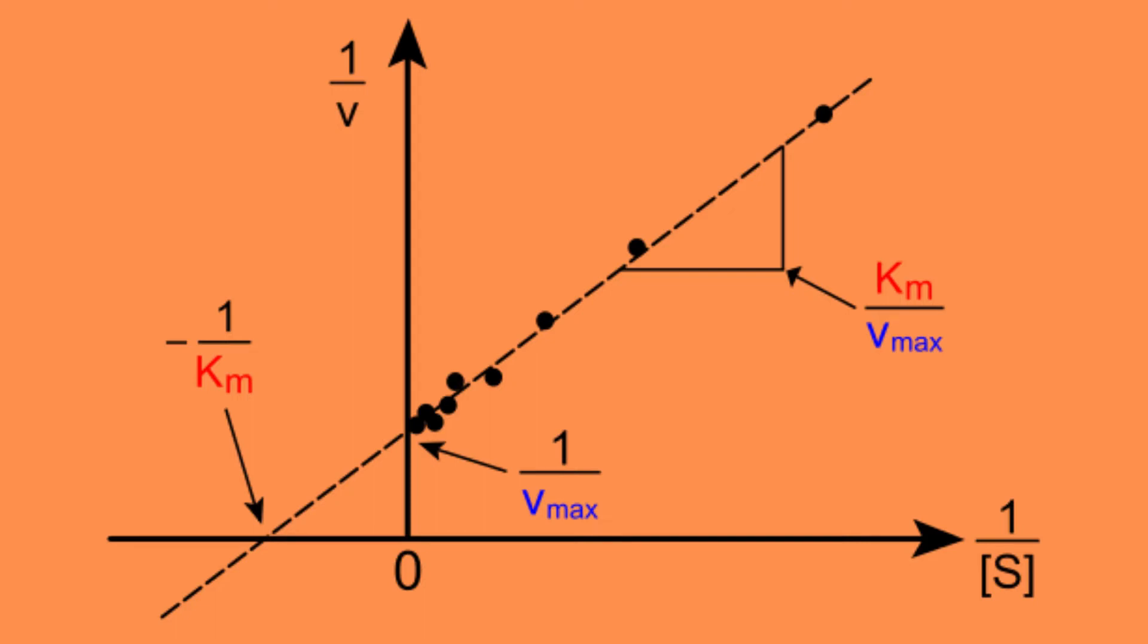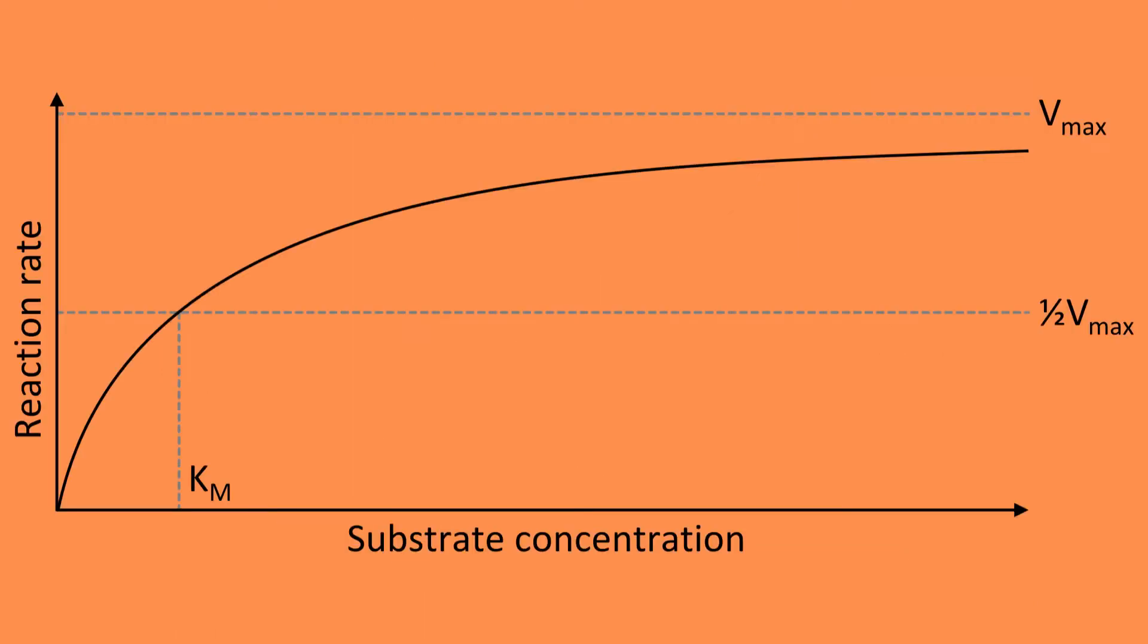Today we will look at the Lineweaver-Burk plot, which is central in enzyme kinetics. A typical curve of enzyme kinetics plots the velocity or rate of reaction on the y-axis and the substrate concentration on the x-axis.